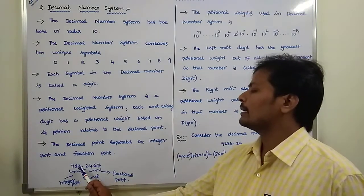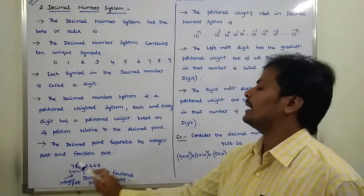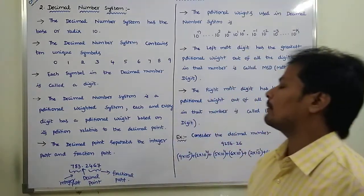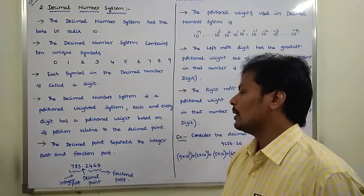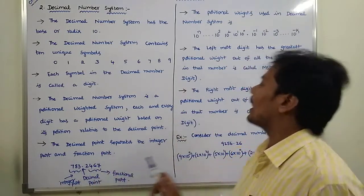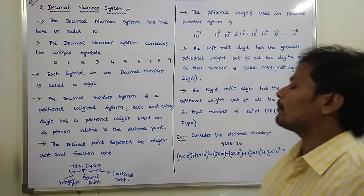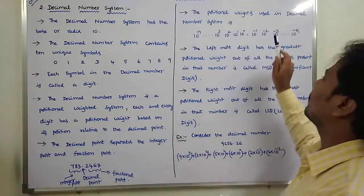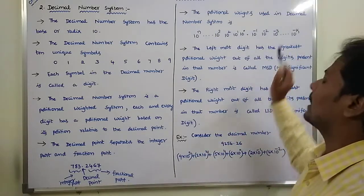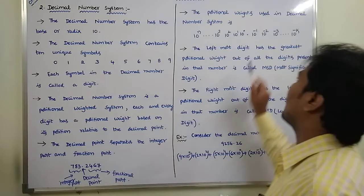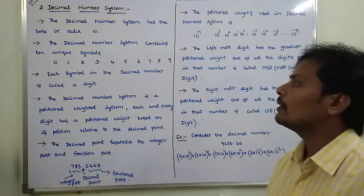Observing the example: 3 has the positional weight 10 power 0, 8 has the positional weight 10 power 1, 7 has the positional weight 10 power 2. In the same way, 2 has the positional weight 10 power minus 1, 6 has the positional weight 10 power minus 3, and 7 has the positional weight 10 power minus 4.